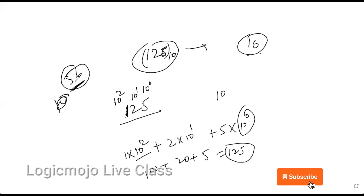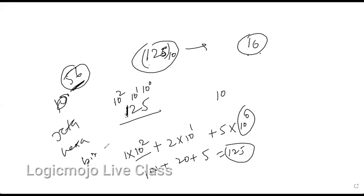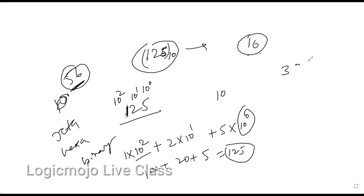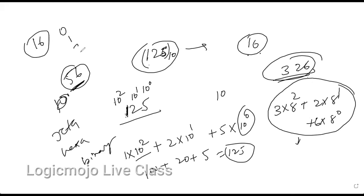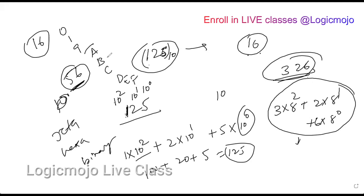For example, if someone gives you 326 in base 8 (octal), it means 3×8² + 2×8¹ + 6×8⁰, which converts to a decimal value. For hexadecimal (base 16), since we can't represent values above 9 with single digits, we use letters A through F for values 10 through 15 after the digits 0 to 9.